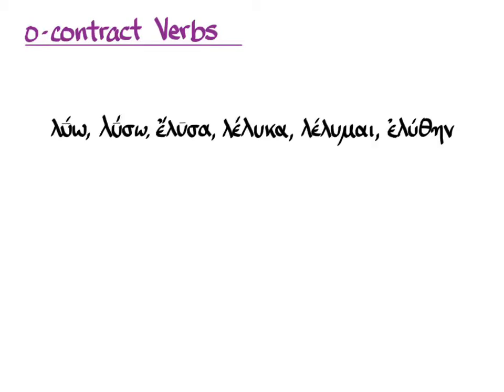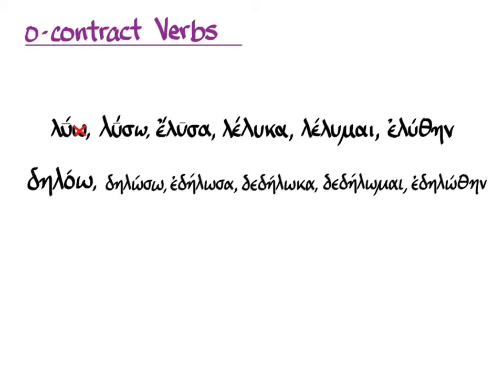Here's the verb you've known so long as our paradigm verb: luo, luso, elusa, leluka, lelumai, eluthane. You know that all you have to do to get the stem from the first principal part is to take off the omega. Greek has another class of verbs whose principal parts go something like this.